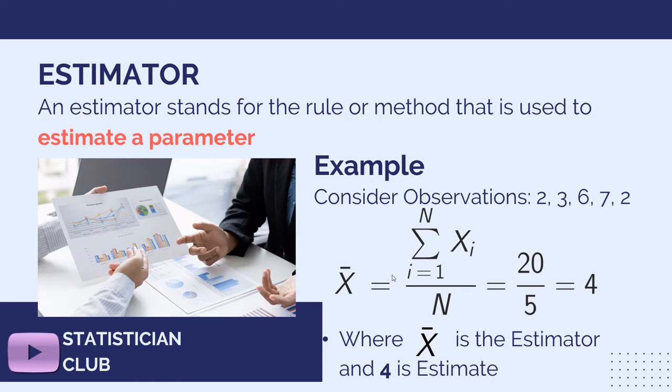This formula x bar is estimator because this formula is used to calculate unknown population parameter mu, the value of unknown population parameter on the basis of sample observations. And this 4, the answer 4 is our estimate which is obtained by using the estimator.